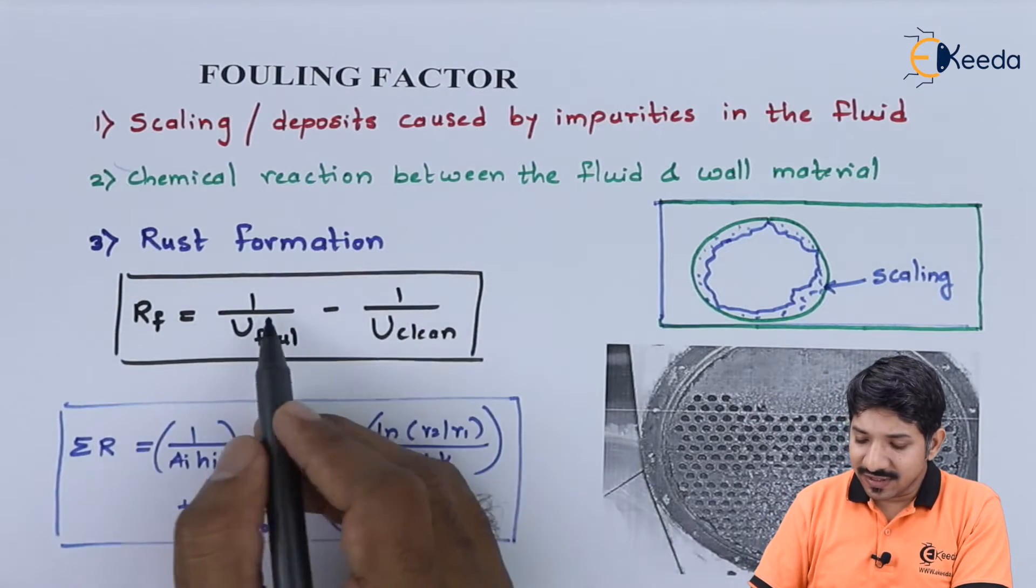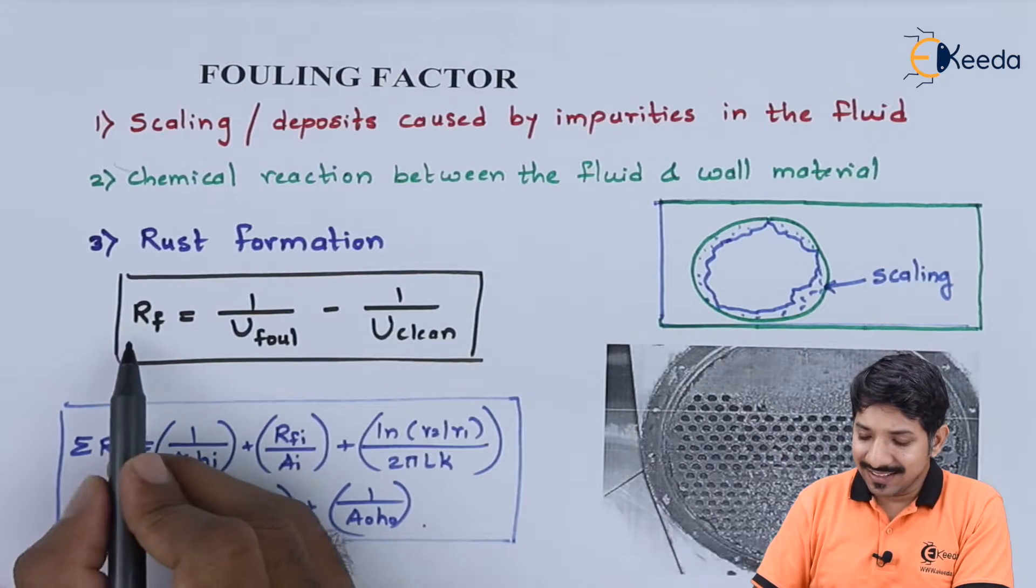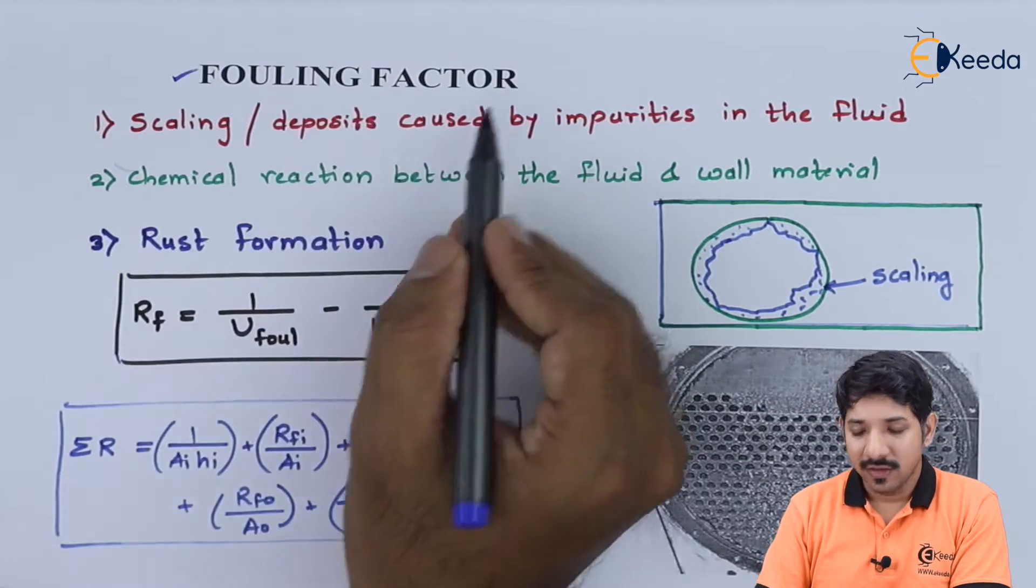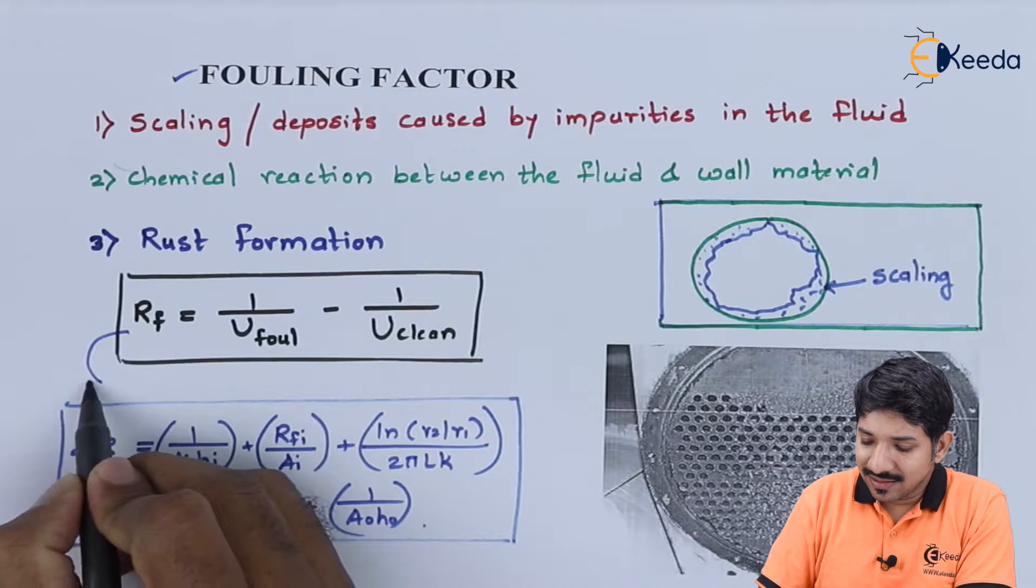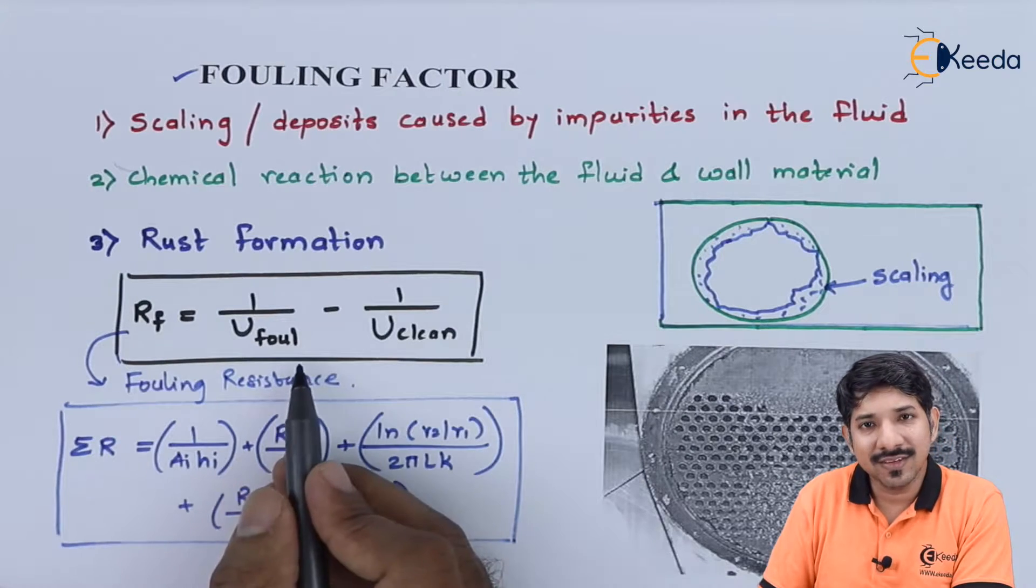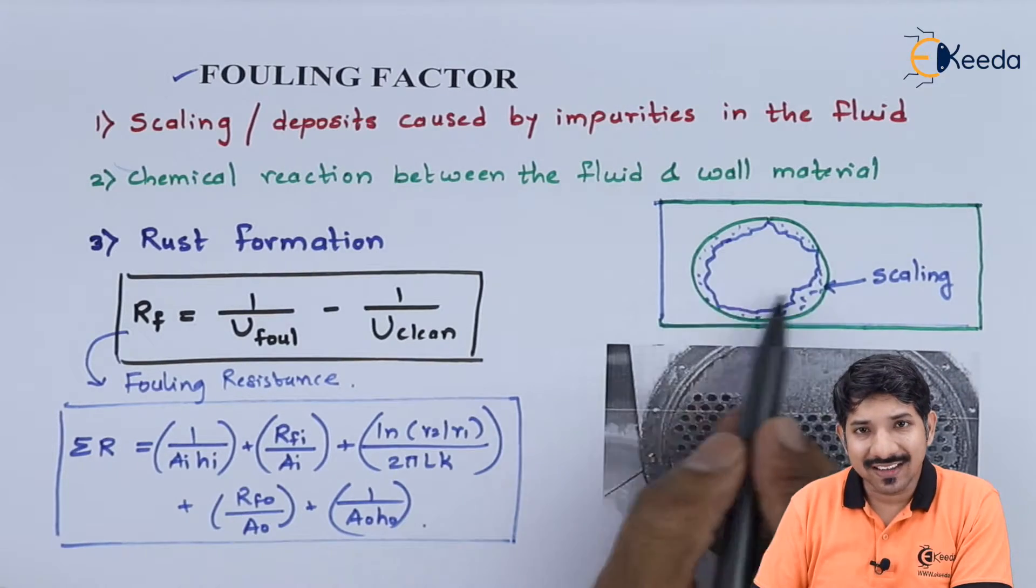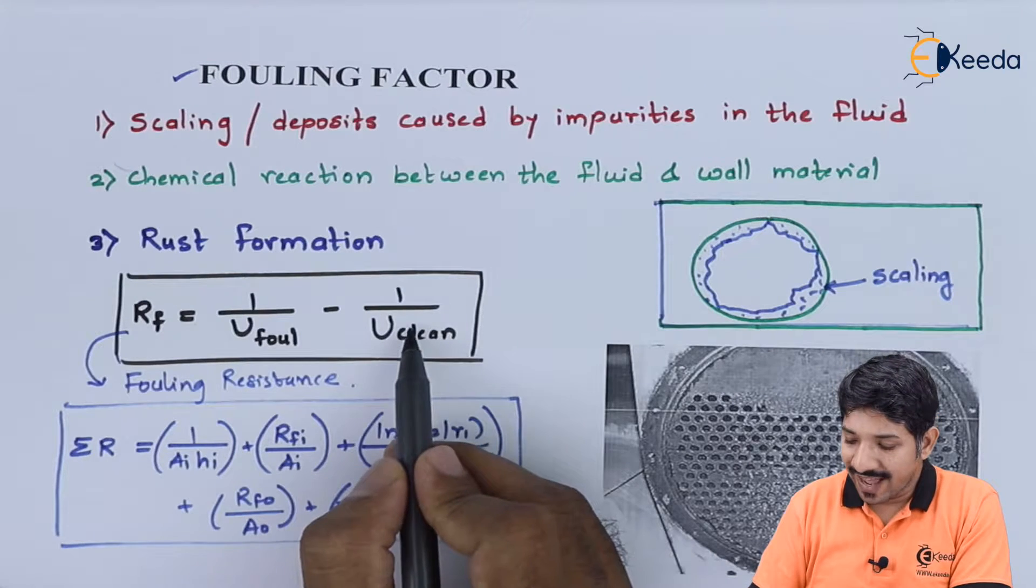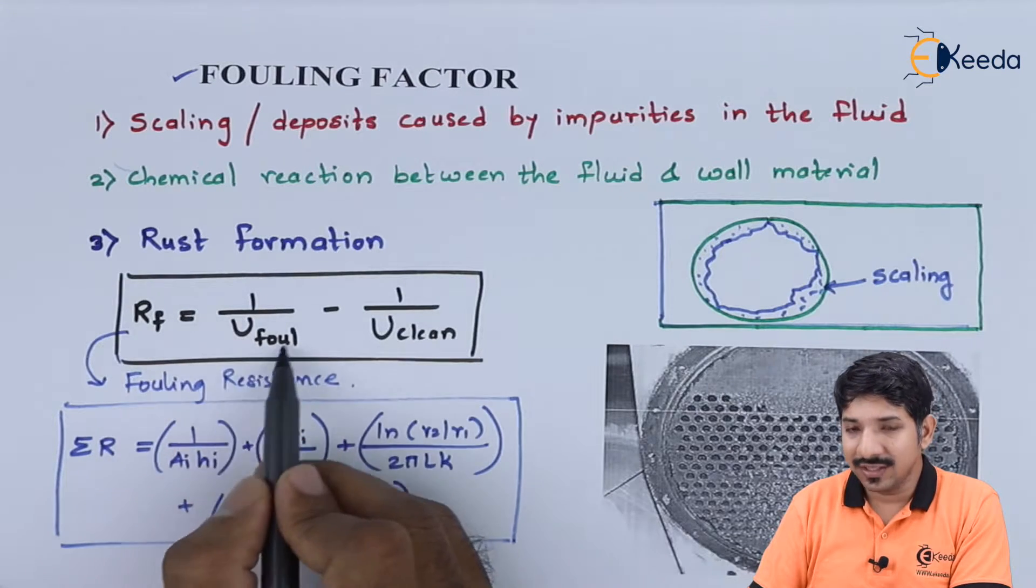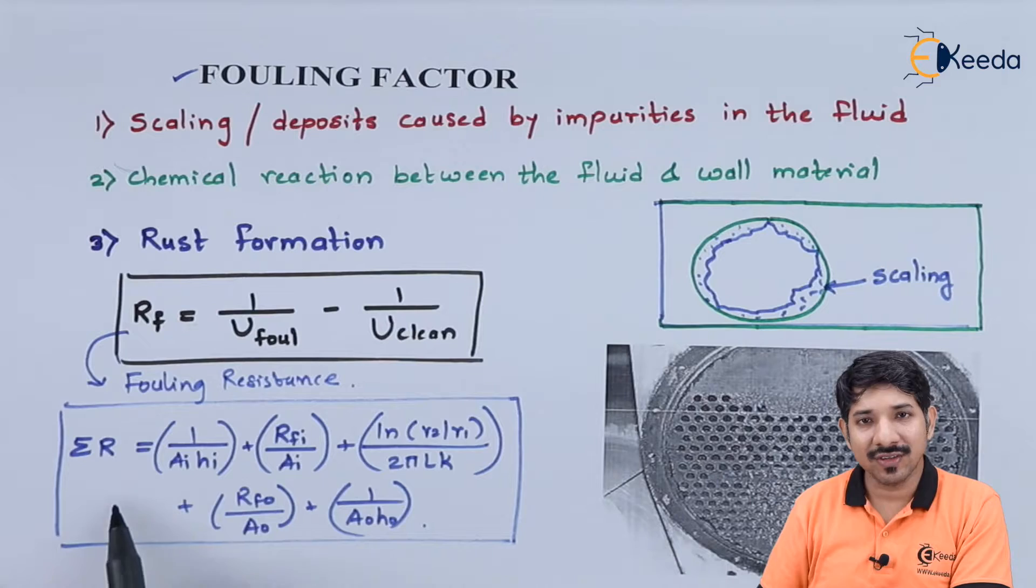So what happens because of this? A thermal resistance is created due to this scaling. Now, this resistance that is created requires us to consider a factor called fouling factor. This fouling resistance is calculated by finding the overall heat transfer for the fouled section and for the clean one. We need to find the U value initially in the manufacturing state and then in the maintenance state.